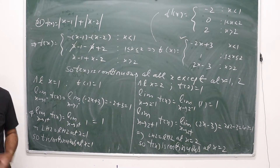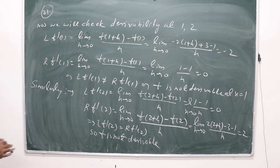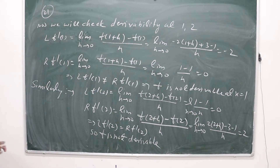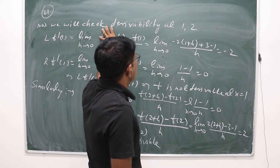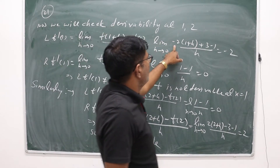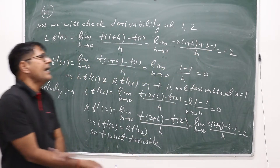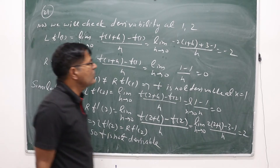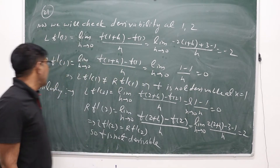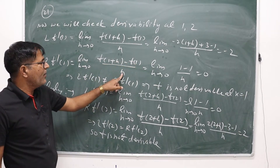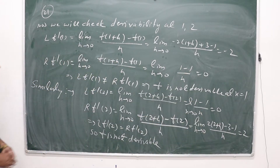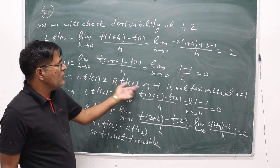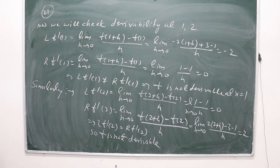Checking differentiability at x = 1: LHD = limit as h→0 of [f(1+h) - f(1)] / h. Since 1+h < 1 (approaching from left), f(1+h) = -2(1+h) + 3, and f(1) = 1, giving LHD = -2. RHD = limit as h→0 of [f(1+h) - f(1)] / h. Since f(1+h) = 1 and f(1) = 1, RHD = 0. Since LHD ≠ RHD, f is not differentiable at x = 1.